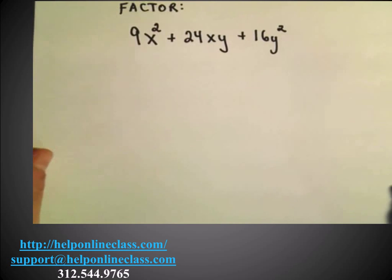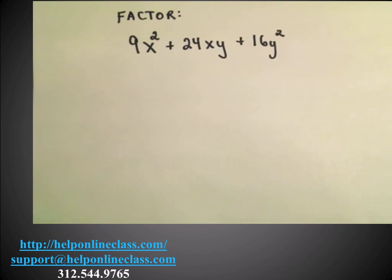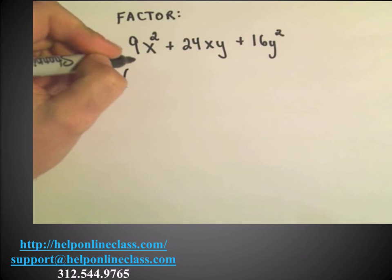So in this one, let's factor 9x squared plus 24xy plus 16y squared. And just to kind of emphasize that formula, it says you need to write the first thing as something squared.